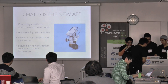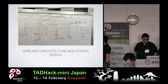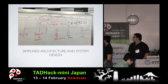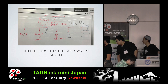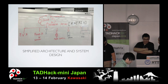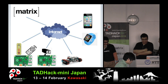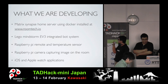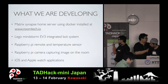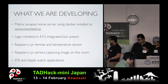Let's look at the simplified architecture and system design. We built this by connecting the dots between the cloud, the Synapse server, and Matrix — and then the EV3, Raspberry Pi, and sensors, and Apple Watch, and the web. This is a much better visualization: Lego Mindstorm integrated body system, Raspberry Pi for the temperature sensor, Raspberry Pi camera for capturing images in the room, and the iOS and Apple Watch application.